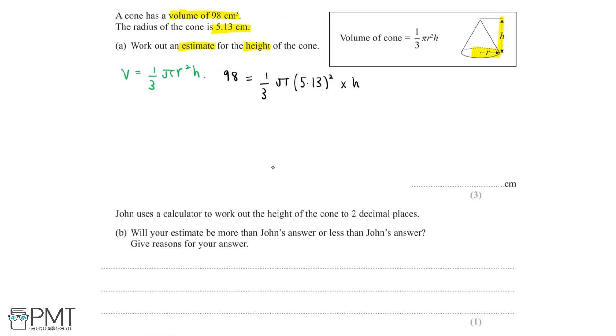Let's simplify this further. One-third multiplied by π multiplied by 5.13 squared is the same as saying π multiplied by 5.13 squared over 3, and then it's all of that multiplied by height gives the volume.